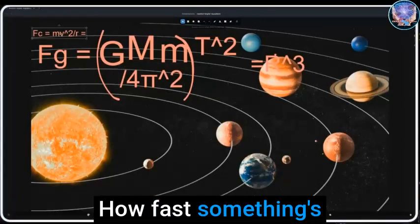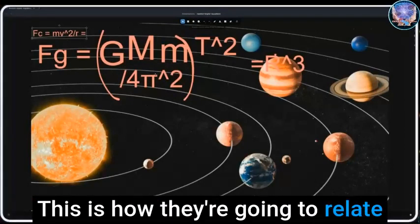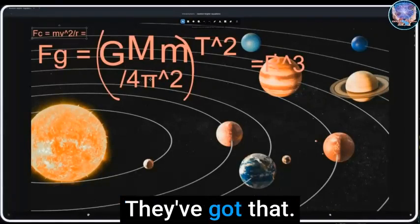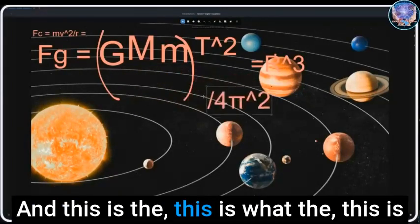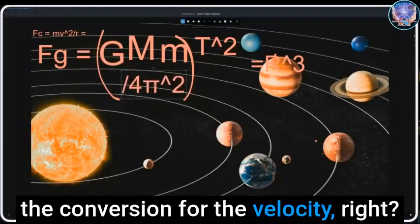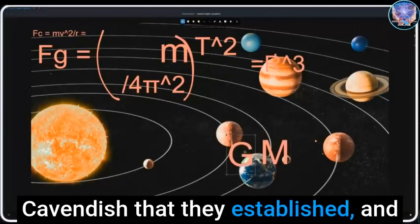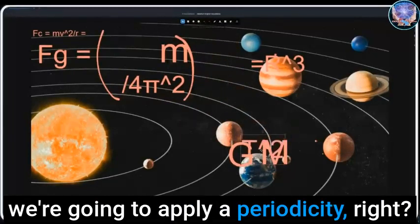What that does is that gives them, that changes this velocity here, how fast something's moving into the sky. This is how they're going to relate it to an orbital distance. This is going to give them the circumference that they've got, and this is the conversion for the velocity. Now we're going to take our two constants from the experiment from Cavendish that they established and we're going to apply a periodicity.